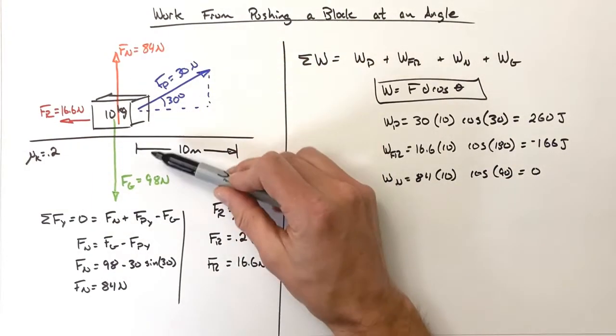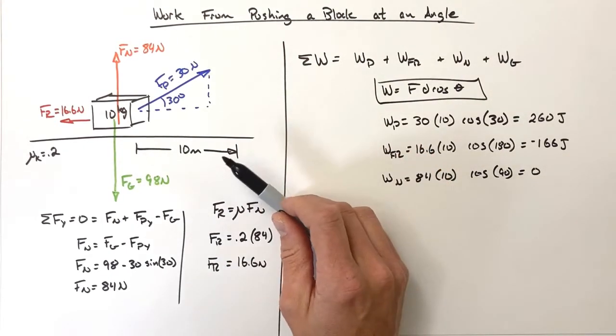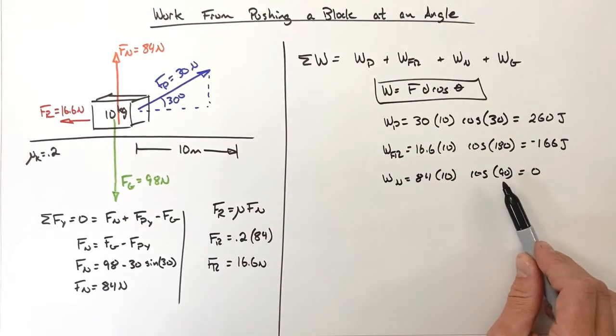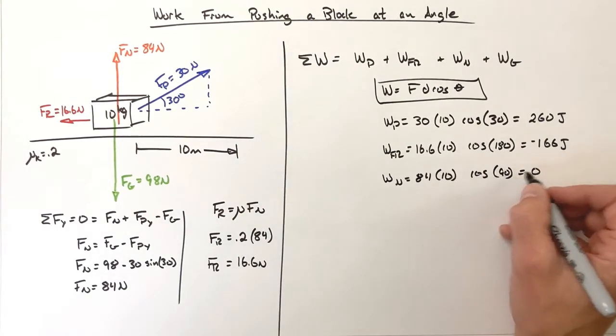Remember, the normal force is straight upward and the displacement is horizontally forward, so there's 90 degrees between them. The cosine of 90 is in fact zero.